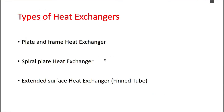Other types of heat exchangers include plate and frame heat exchangers, spiral plate heat exchangers, and extended surface heat exchangers. Extended surface heat exchangers have extended surfaces on their outer surface to increase the heat transfer rate — a simplified example is the vertical fins seen on a motorbike engine.